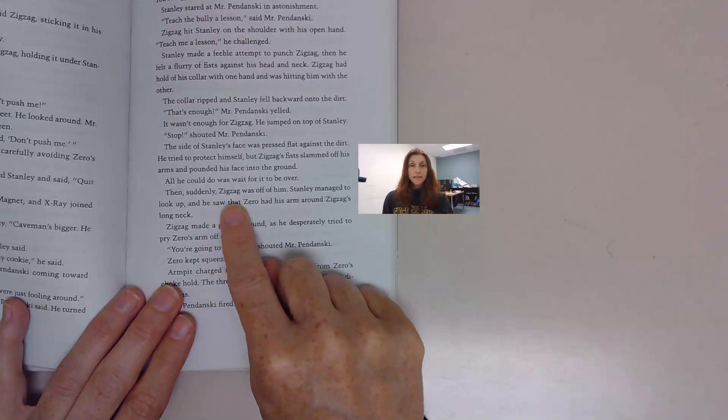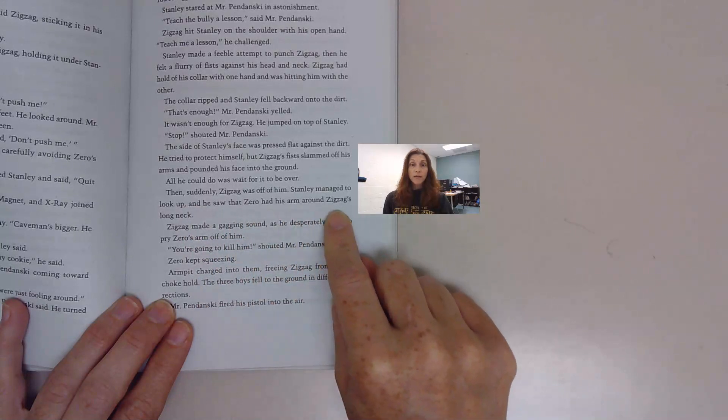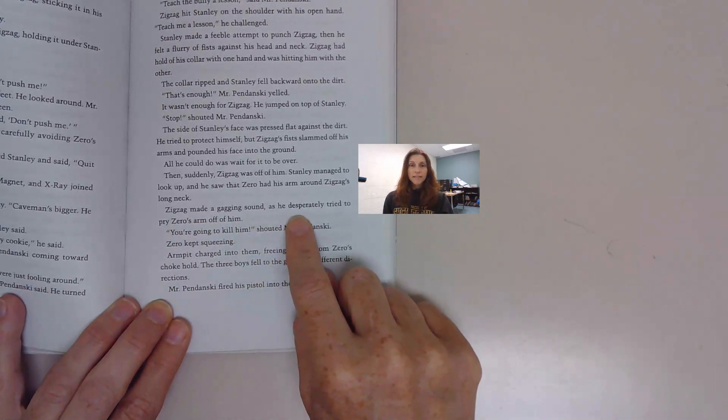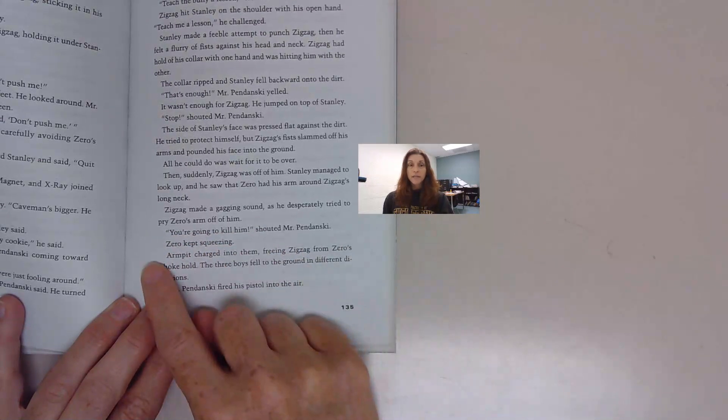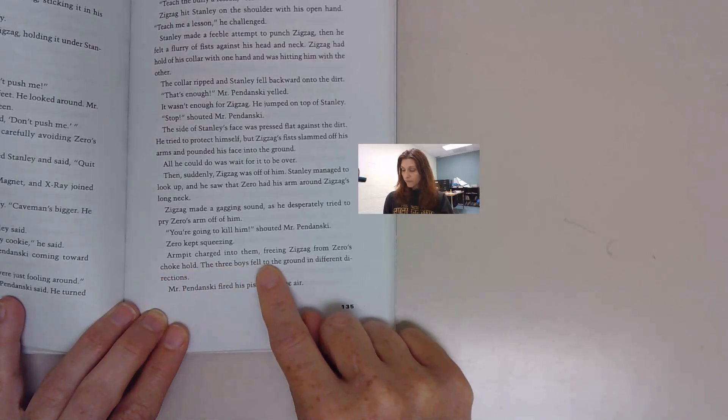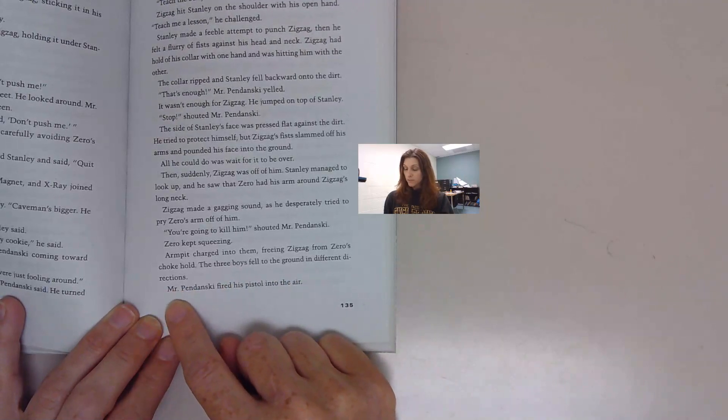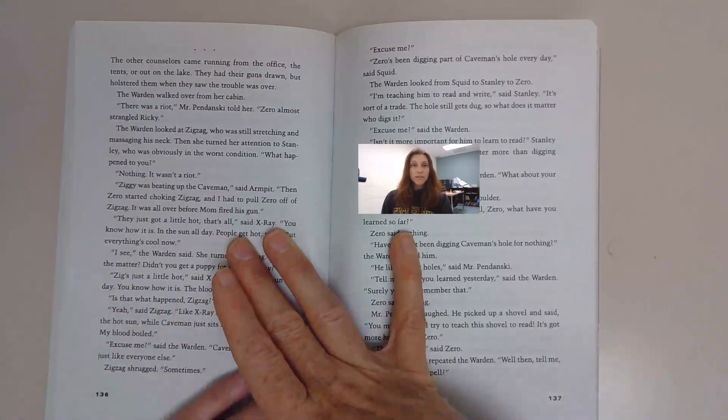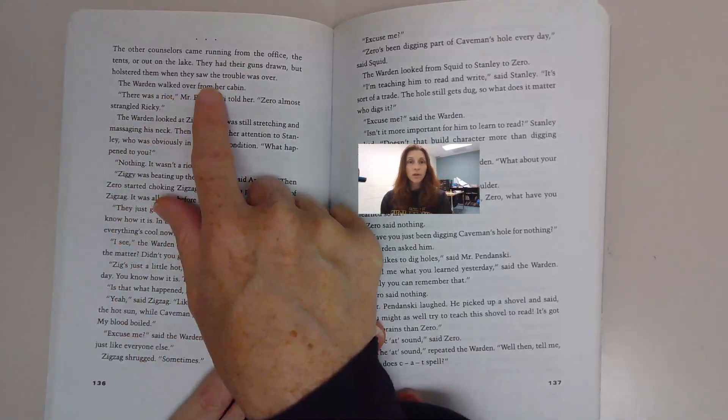Then, suddenly, Zigzag was off him. Stanley managed to look up and he saw that Zero had his arm around Zigzag's long neck. Zigzag made a gagging sound as he desperately tried to pry Zero's arm off him. You're going to kill him, shouted Mr. Pendanski. Zero kept squeezing. Armpit charged into them, freeing Zigzag from Zero's choke hold. Mr. Pendanski fired his pistol into the air. The other counselors came running. They had their guns drawn, but holstered them when they saw the trouble was over.